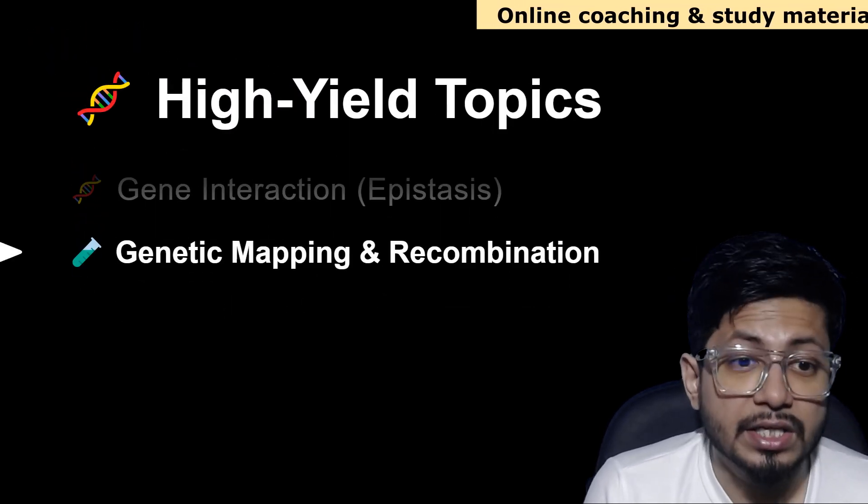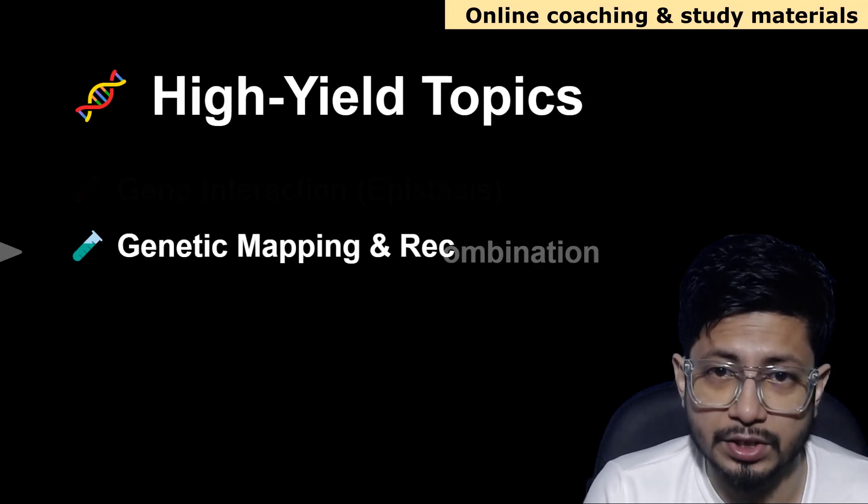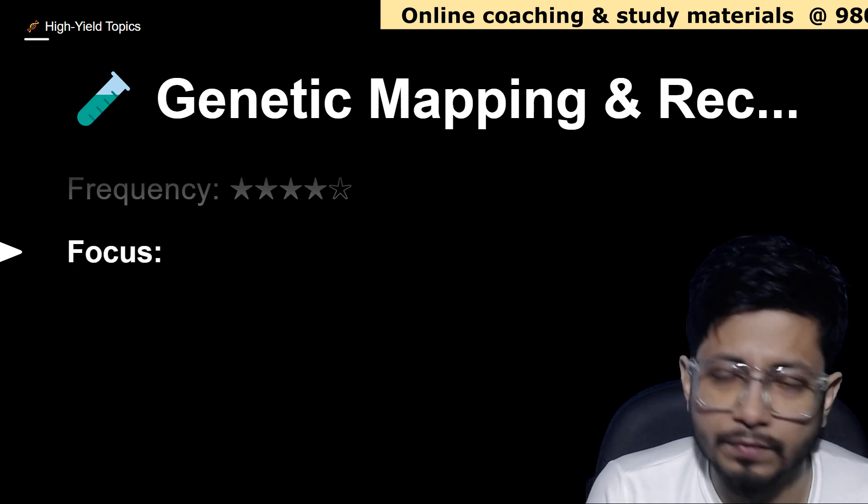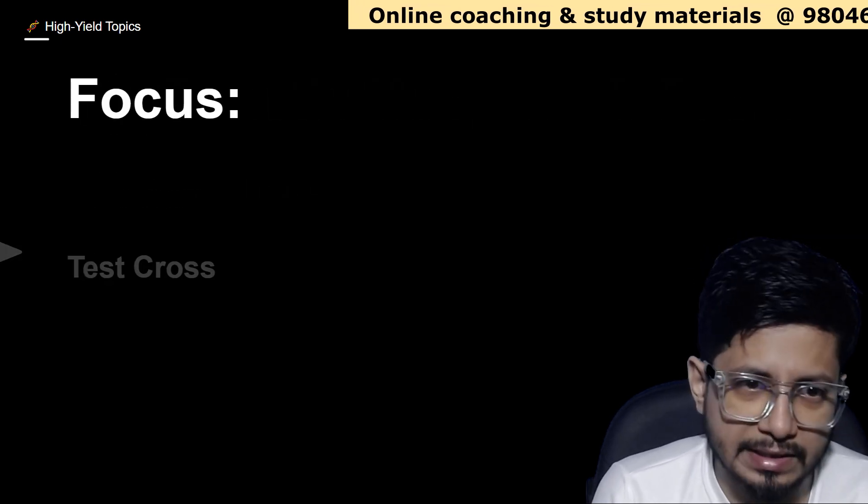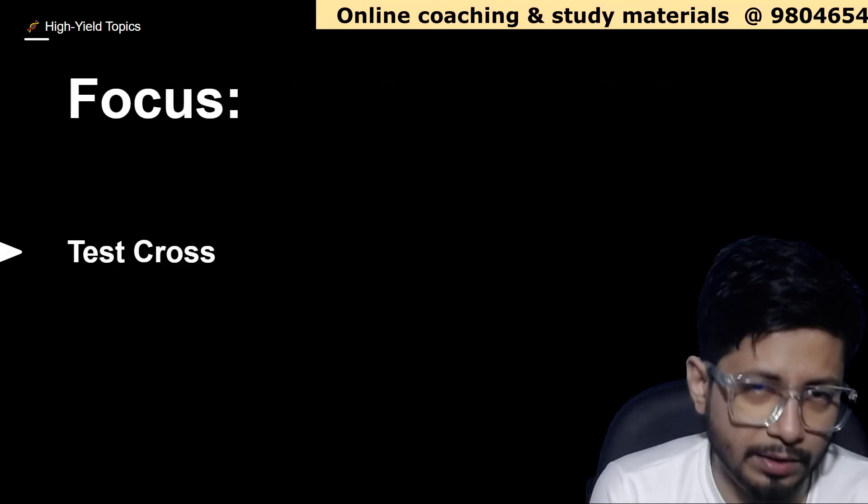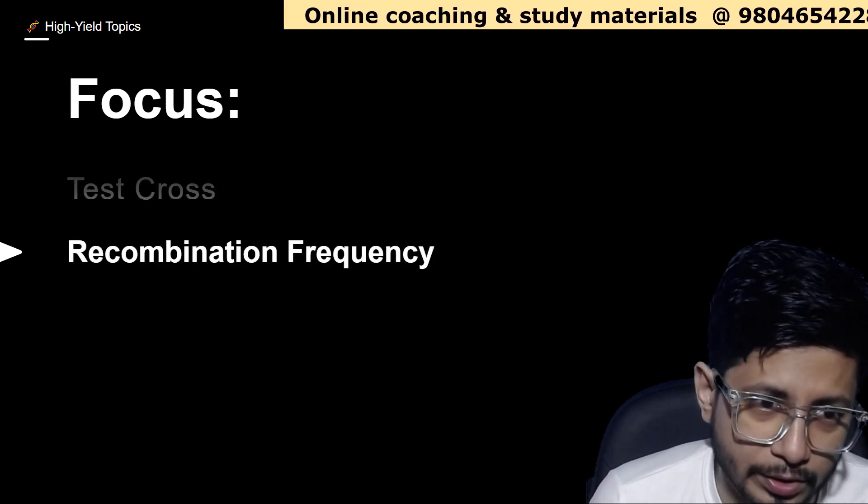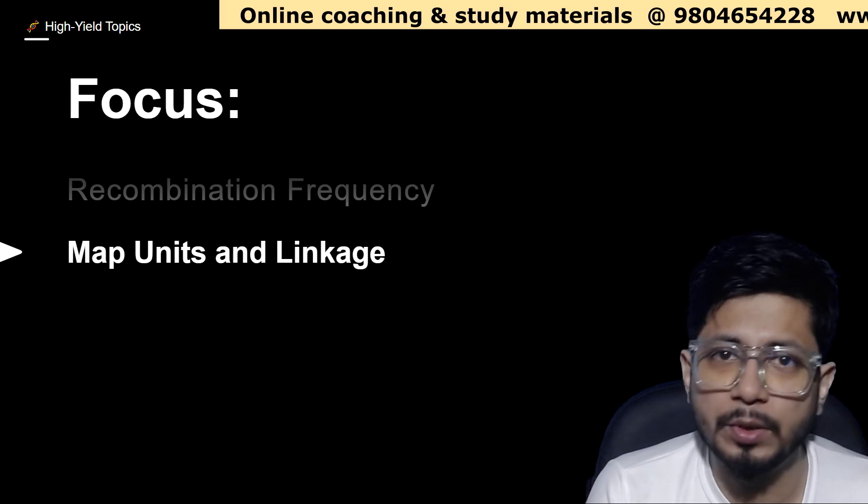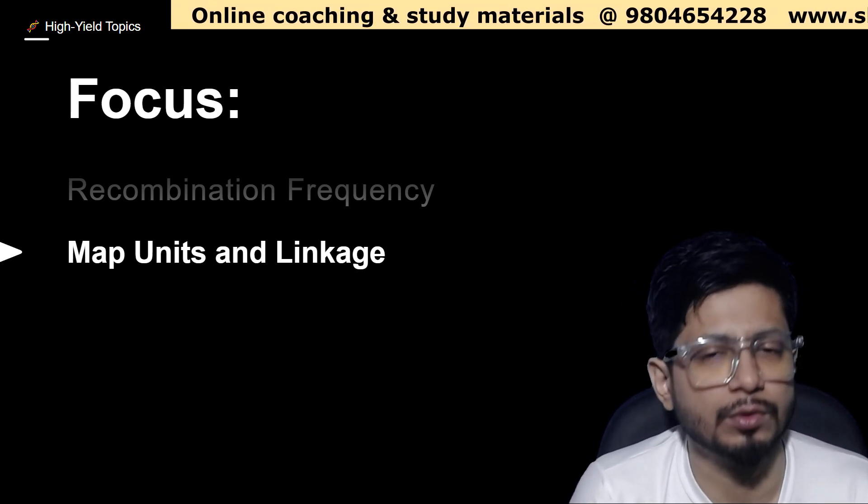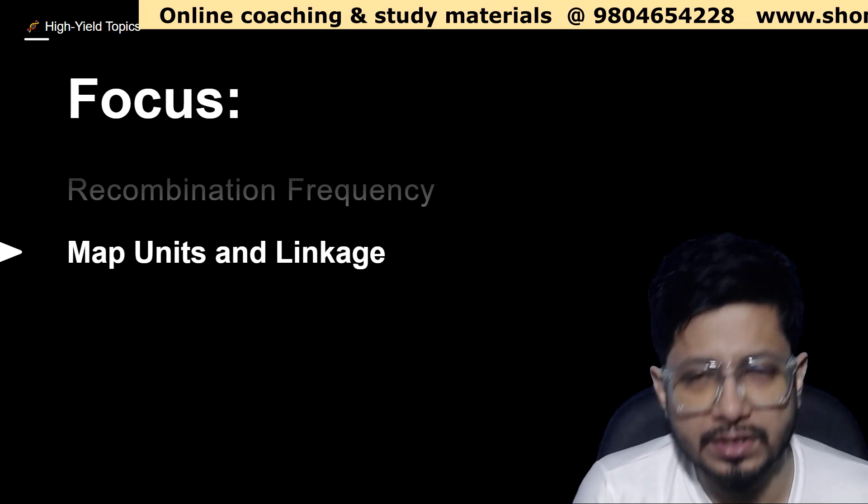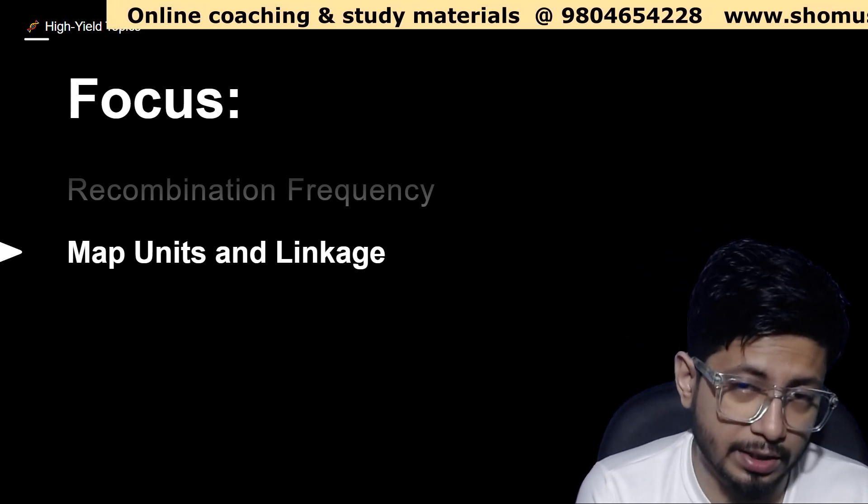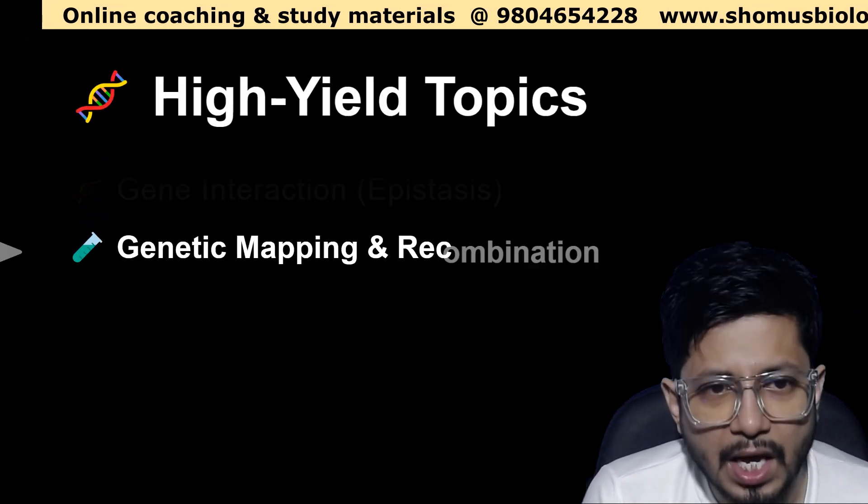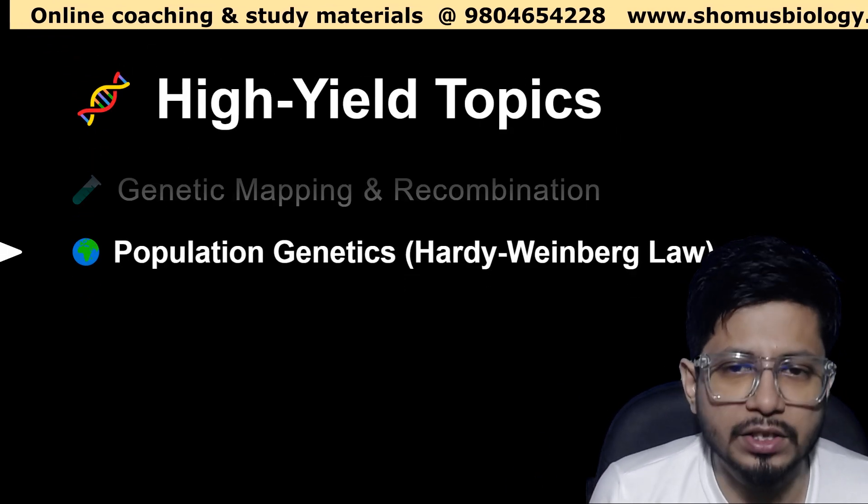Genetic mapping and recombination is another high yield topic. Here the frequency is 4 out of 5 stars. The focus here is the test cross. Particular test crosses will be asked in the question. Recombination frequencies you need to answer, and map units and linkage mapping—the linkage between the two genes, the map units, the map distance between the two genes, their location with respect to each other. Numerical problems are also very important. Population genetics, Hardy-Weinberg equilibrium.